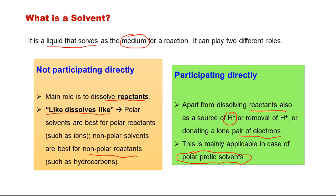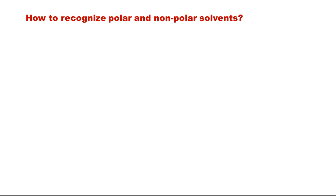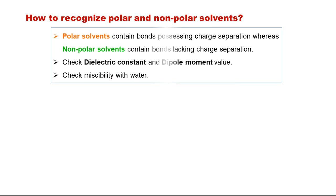How do we recognize polar and non-polar solvents? That is the first classification. Polar solvents contain bonds between two atoms where charge separation is possible. If there is some electronegativity difference, there will be charge separation — the more electronegative atom will carry a delta-negative charge. But if the electronegativity values are very close, such as C-C or C-H bonds, there will be no charge separation and we call them non-polar solvents.